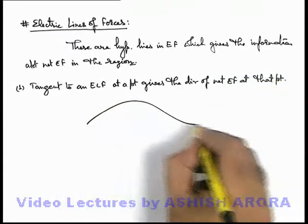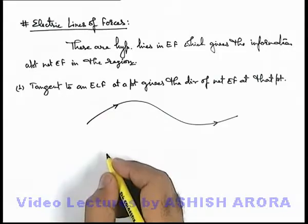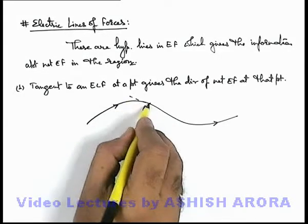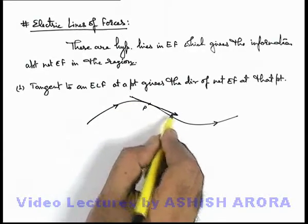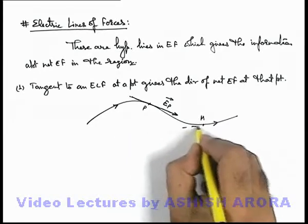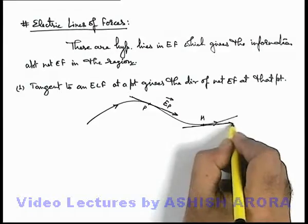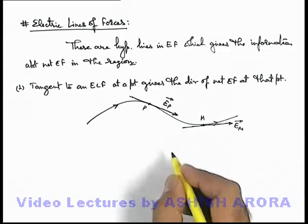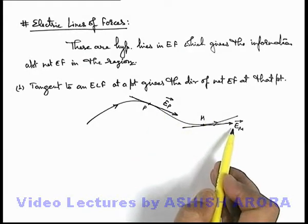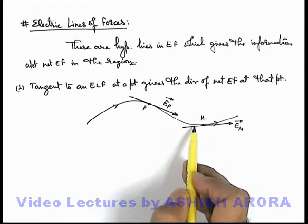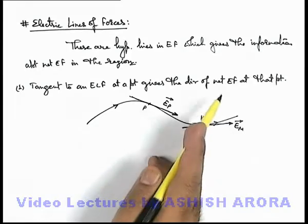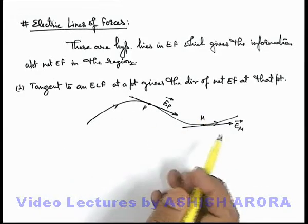For example, if this is an electric line of force in the region of electric field, and say this is a point P, then at this point P we draw the tangent — in the direction of the electric line — and this is the direction of the electric field vector at point P. Similarly, at point M we draw the tangent, and that gives the direction of the electric field vector at point M. Always remember that the E_P and E_M vectors are the net electric field vectors at points P and M respectively. Hence, wherever in a region electric field is present, at every point some electric line of force must exist.